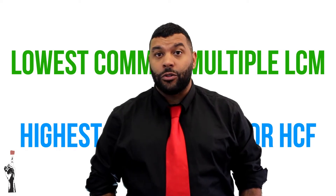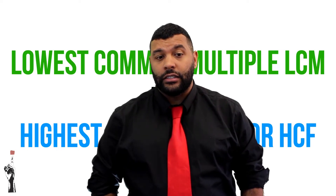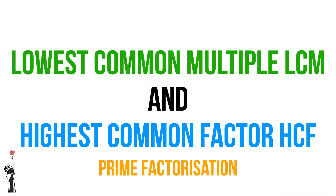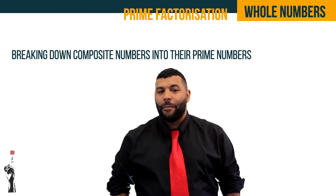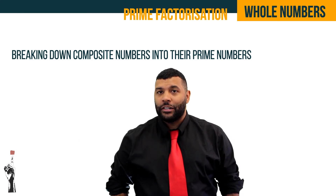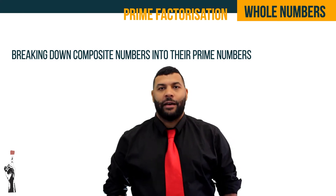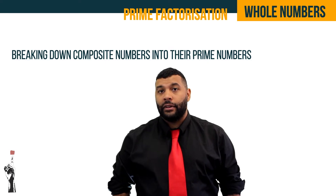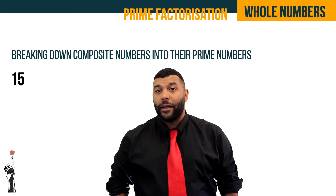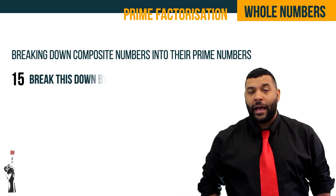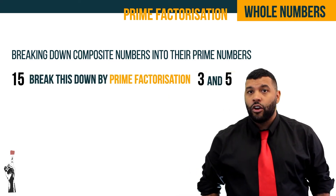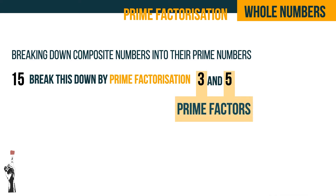In order to calculate the LCM and HCF we need to be able to do some prime factorization. So let's get into this lesson. What is prime factorization? Prime factorization is breaking down any number into its prime factors. For example, if we have the number 15, by prime factorization we should get 3 and 5, which are both prime factors.